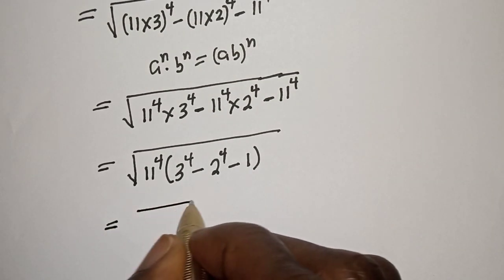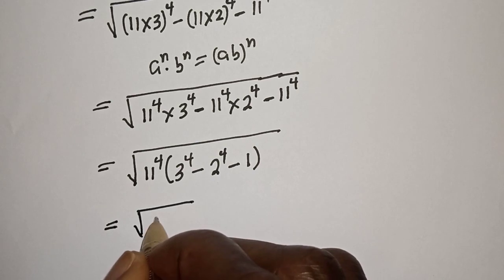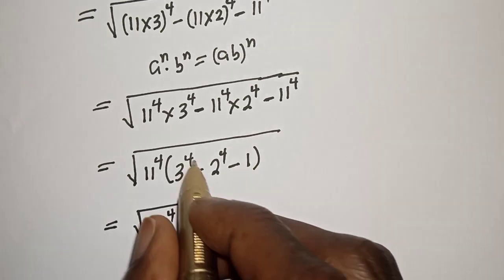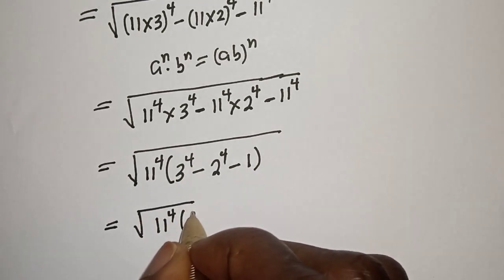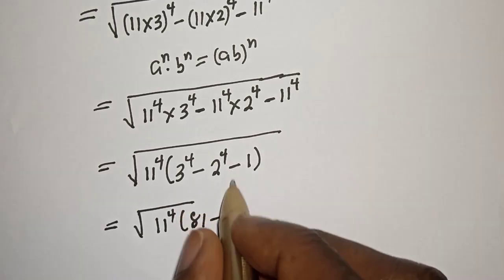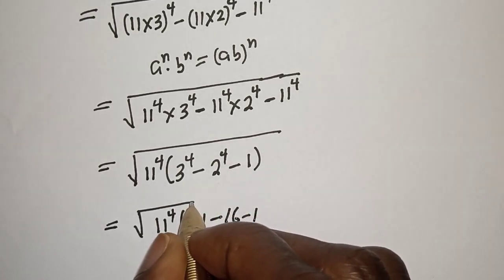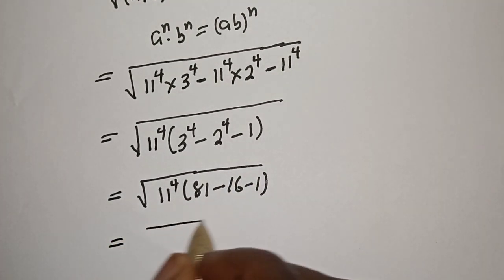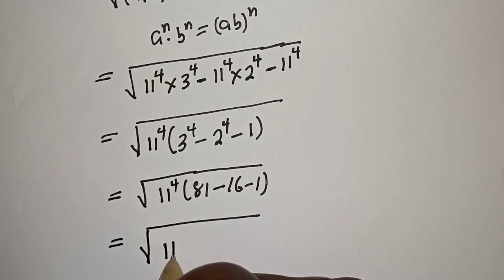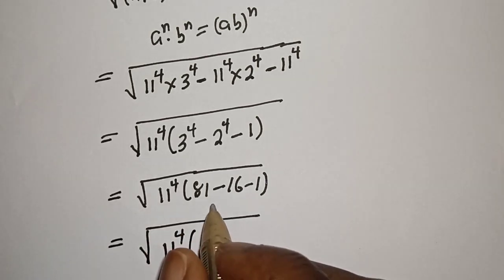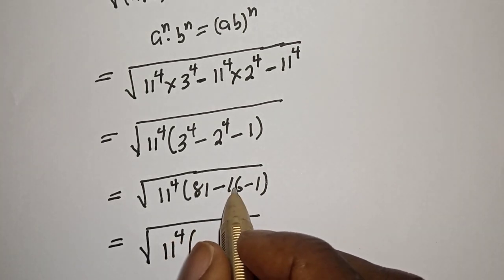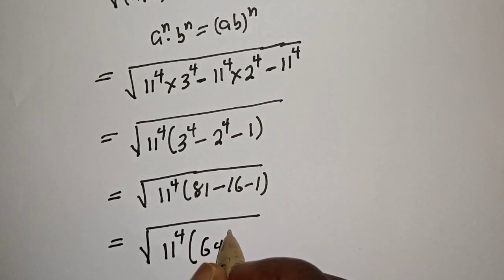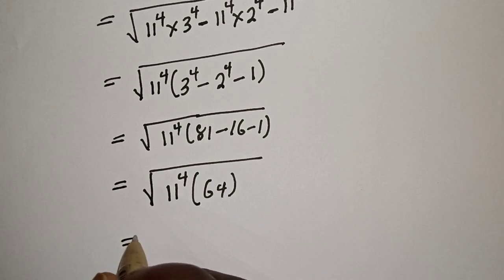Equal to square root of 11 raised to power 4 times bracket: 3 raised to power 4 is 81, minus 2 raised to power 4 is 16, minus 1. That gives us 81 minus 16 minus 1, which equals 64. So this can be written as square root of 11 raised to power 4 bracket 64.